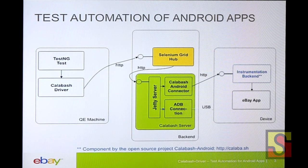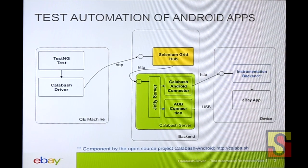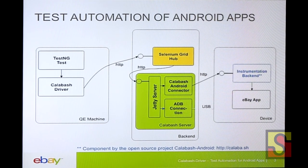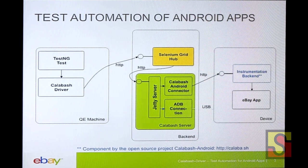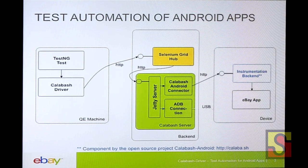From an architectural perspective, you see the blue box — that's the test server APK that comes from the Calabash Android project. The Calabash server and the Calabash driver are the parts I've written, with two main components. One is used to install the app on different devices, and the connector redirects the Calabash Android commands to the test server APK. Different devices are described with capabilities, which works very well.